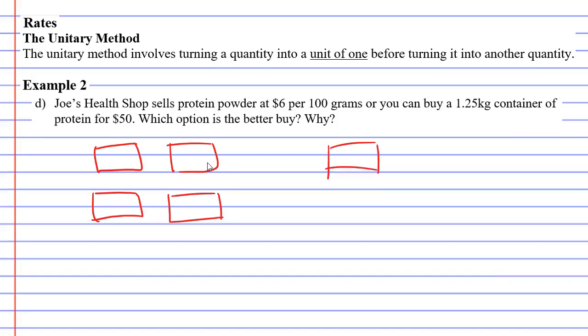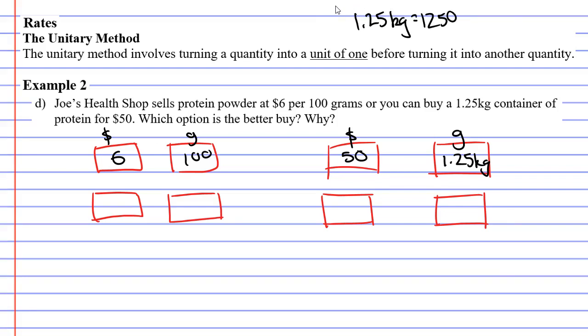We have $6 per 100 grams on the left, and on the right side we had 1.25 kilograms for $50. The first thing I like to do is convert my kilograms into grams because I want the units to be the same. 1.25 kilograms is the same as 1,250 grams. I'm just going to change that, put everything in the same units.